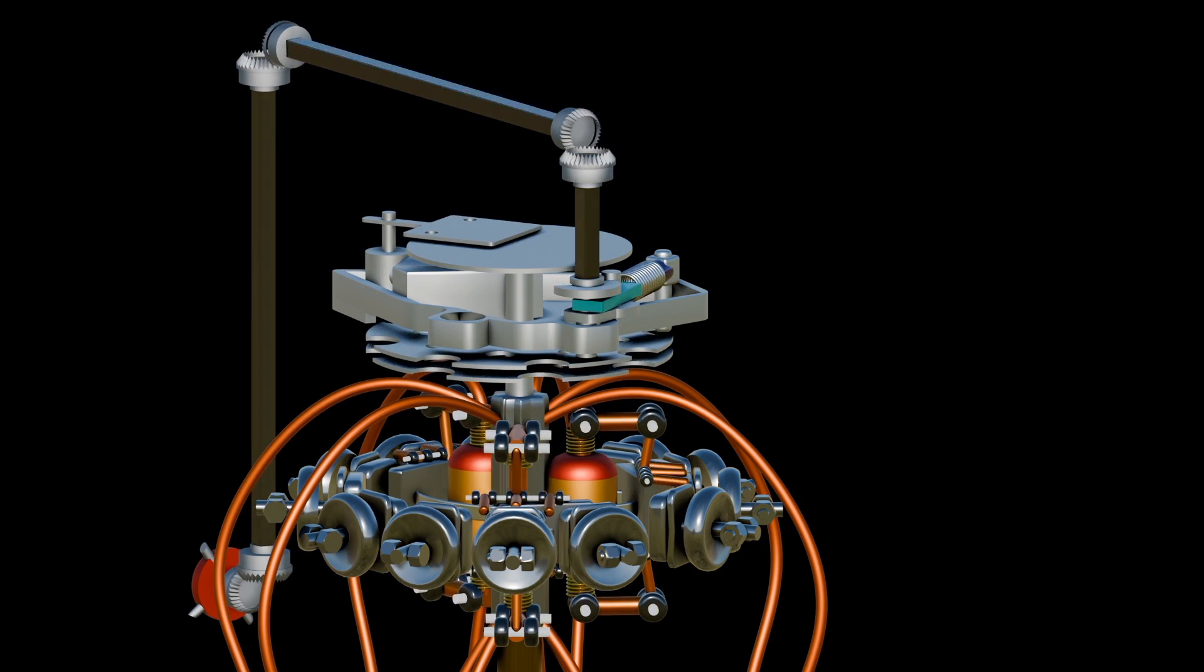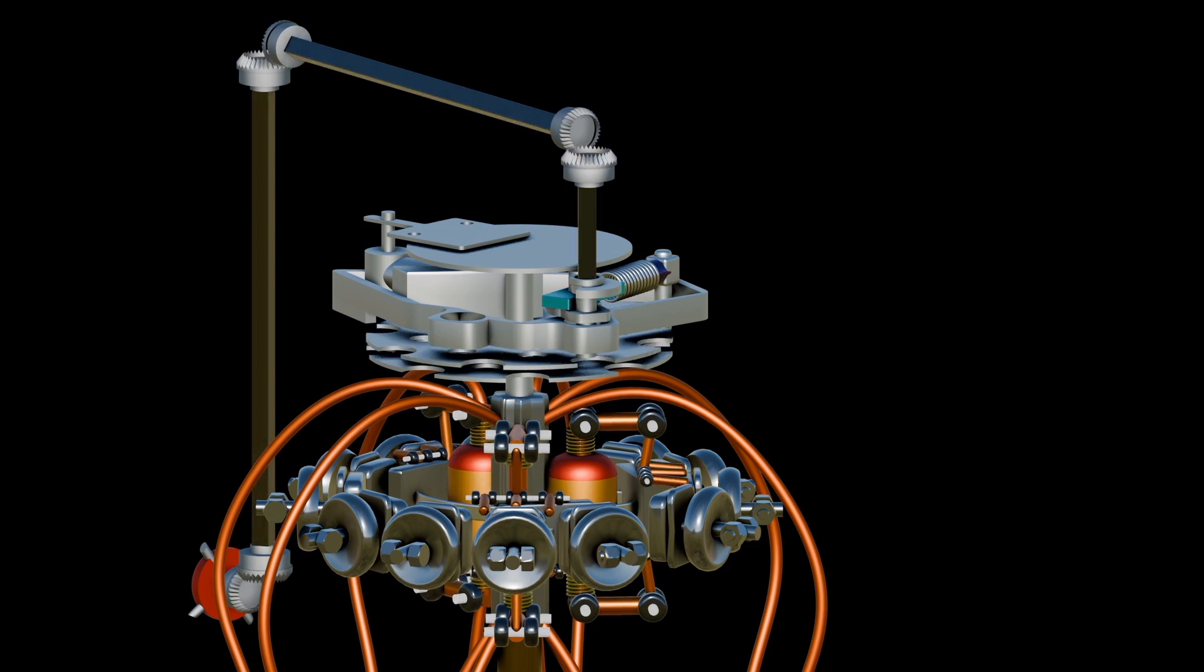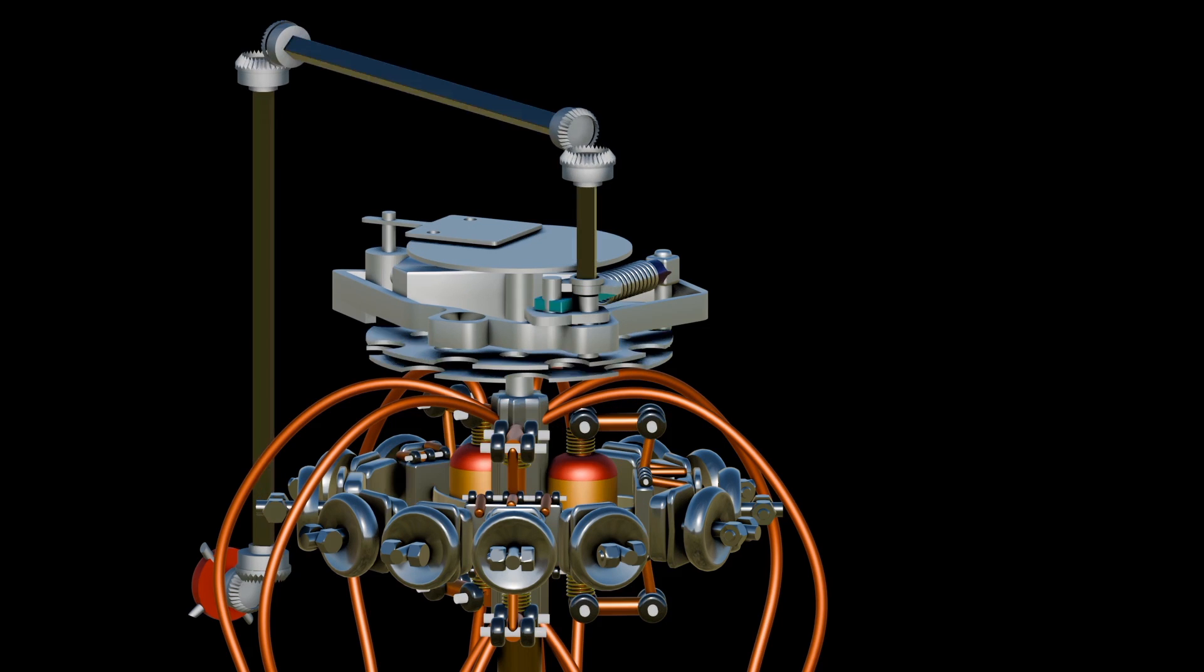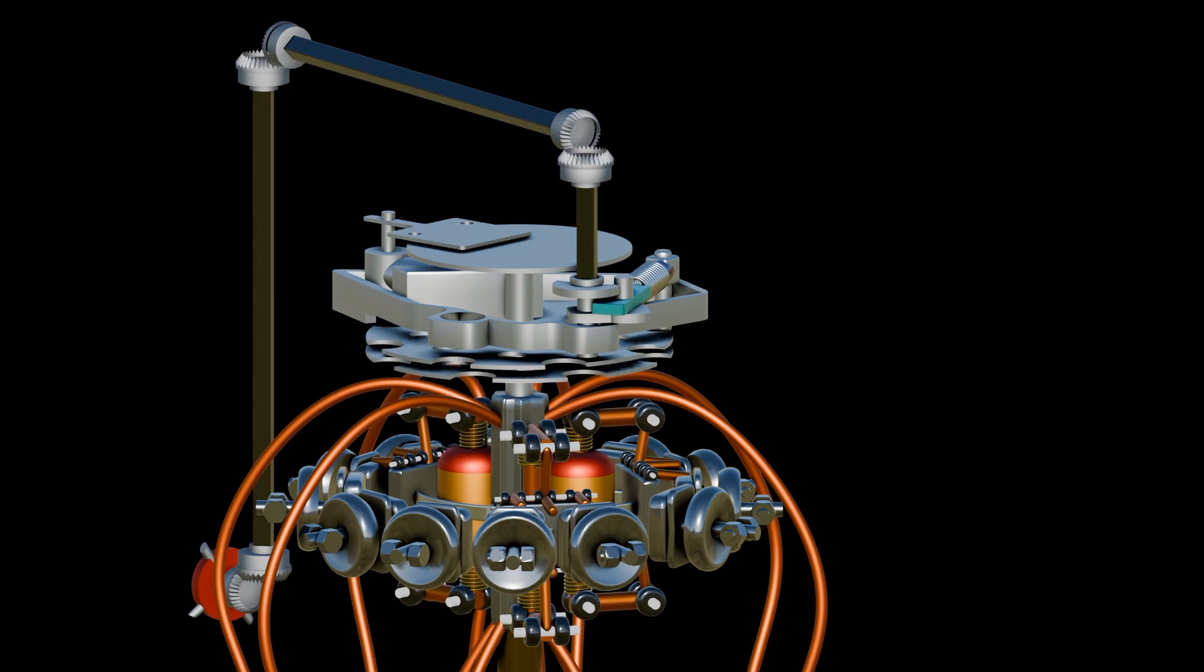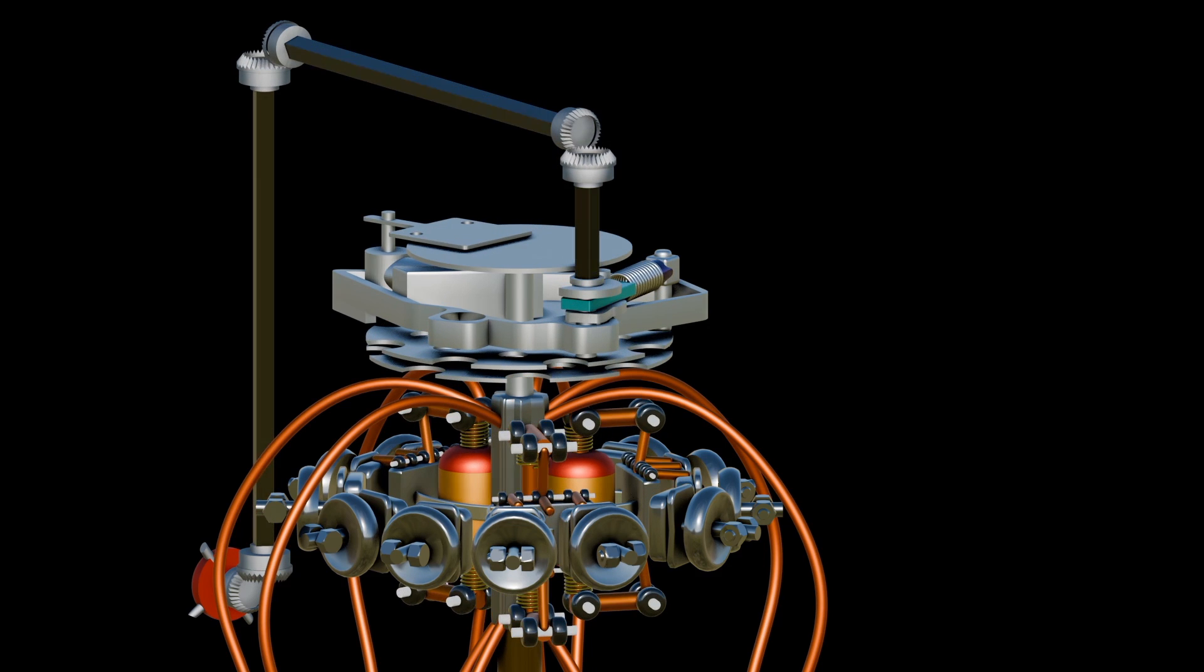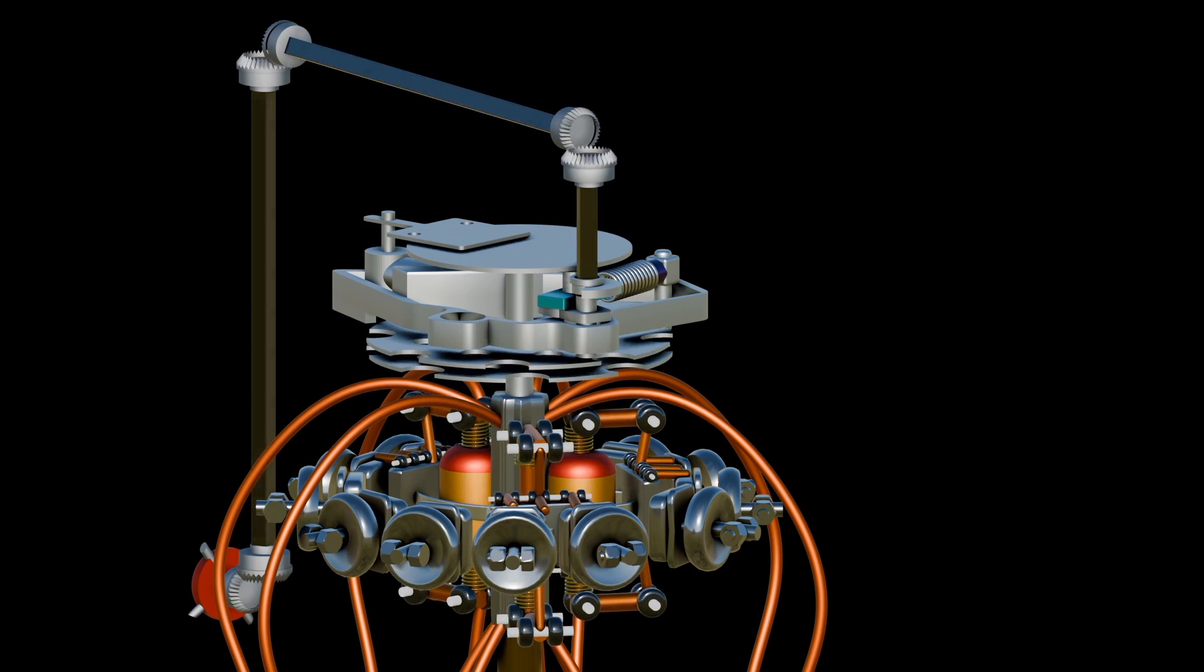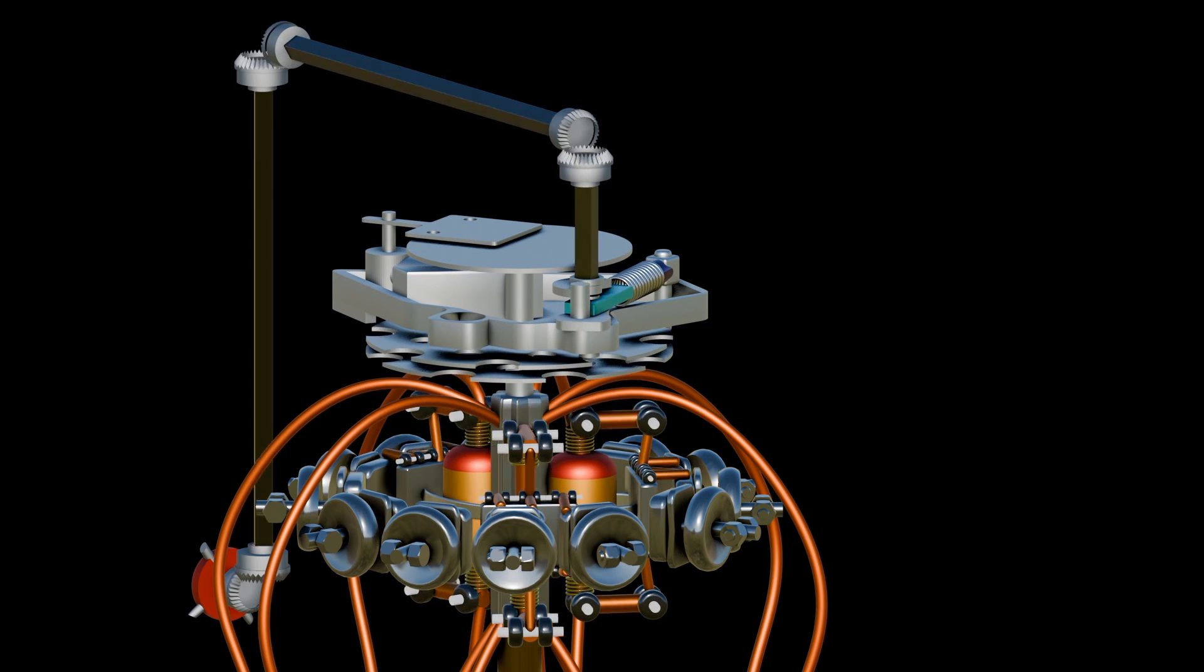During operation, the control system receives signals indicating the need for voltage adjustment. It then activates the tap changer mechanism to change the tap position while ensuring that the transformer remains energized.